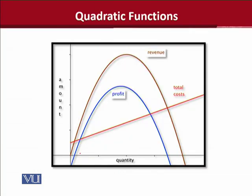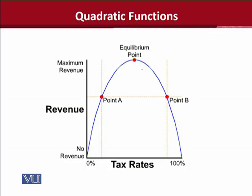There are also economic examples to support the application of quadratic functions. The total cost function is present, but the most important are the profit function and the revenue function — these follow a sad parabola or inverted U-shaped parabola, which means there is a quadratic function in their background. Another example is the famous Laffer curve, in which tax rates and revenue generation are depicted, and the shape has a parabolic trend — it is an inverted U-shaped parabola. So in both microeconomics and macroeconomics, we can see quadratic functions coming to our help.